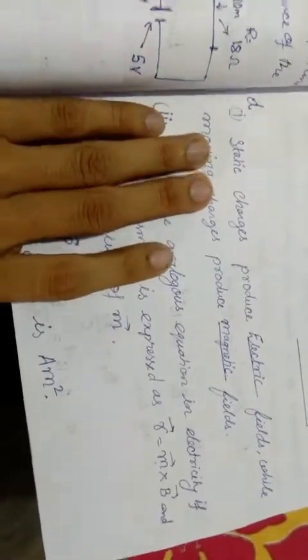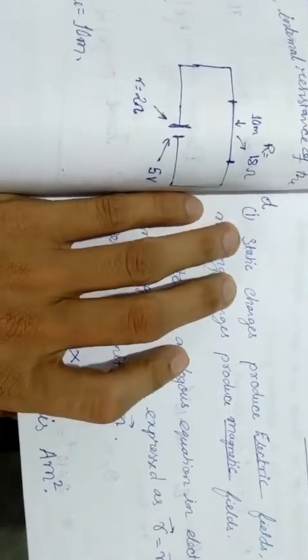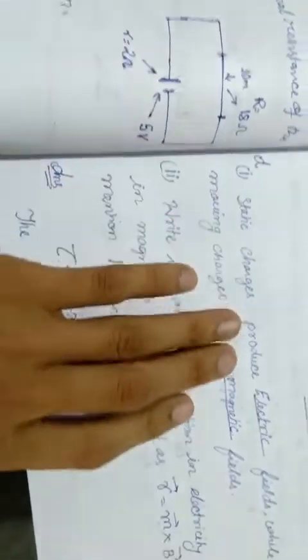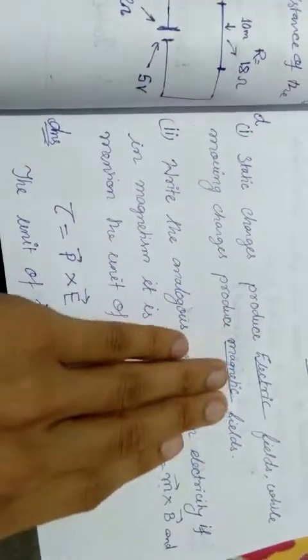Today I am solving the previous year physics equation paper. Question number D: Static charges produce electric fields while moving charges produce magnetic fields.